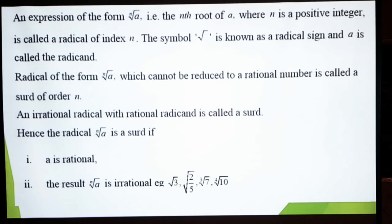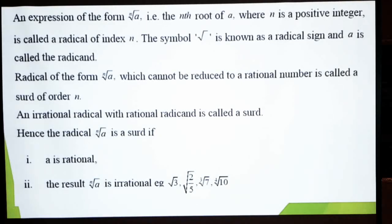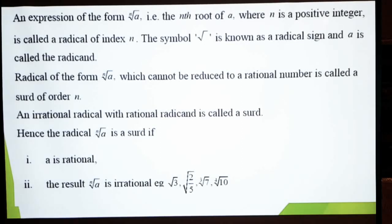A surd is a radical of the form nth root of a. The nth root of a means taking the nth root repeatedly. When we remove the square root sign, this form becomes a raised to the power 1 over n. So this is called the nth root of a, where n is a positive integer.